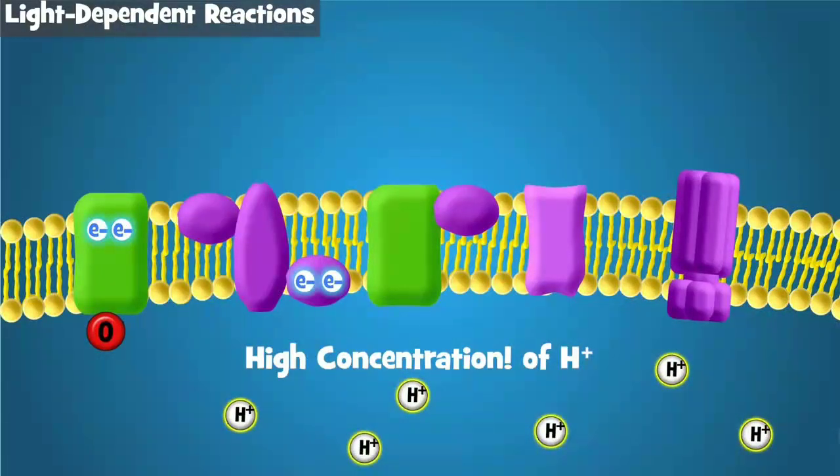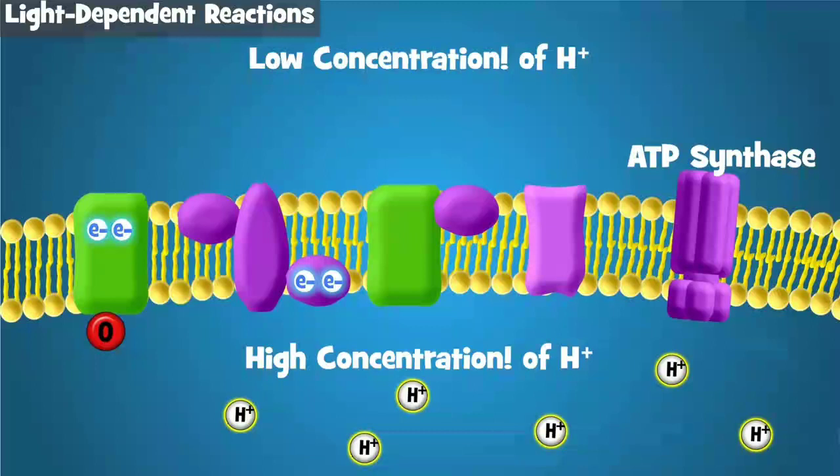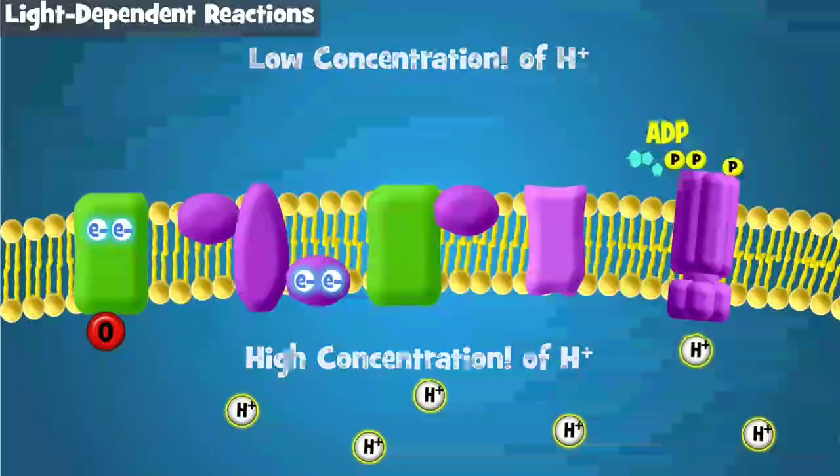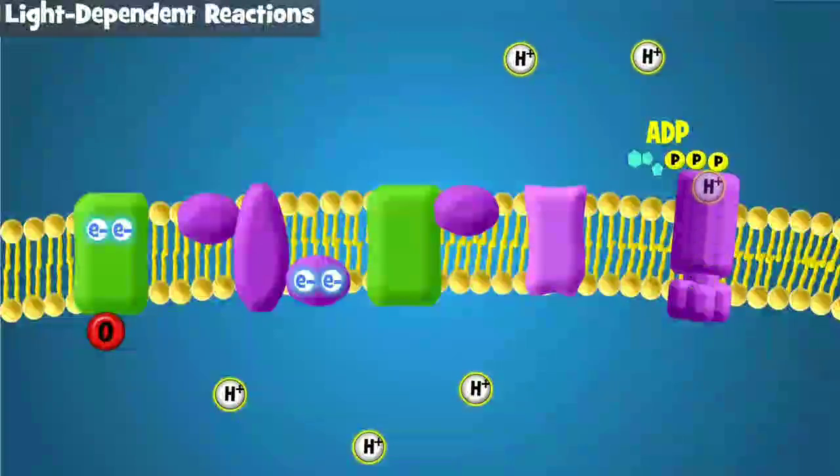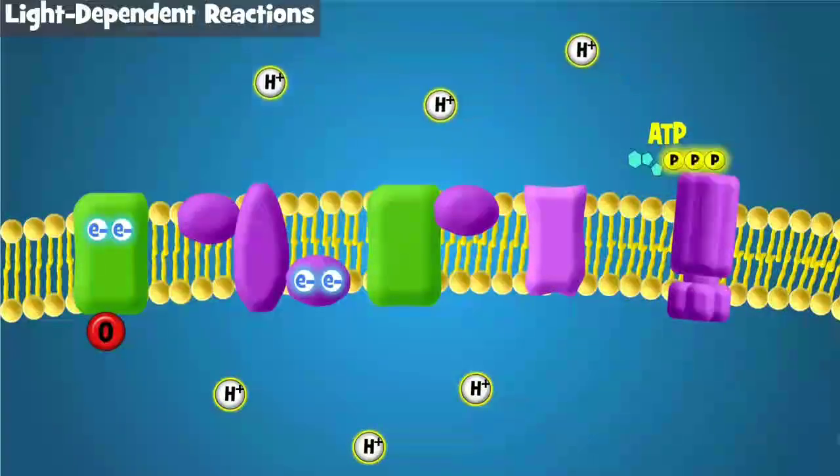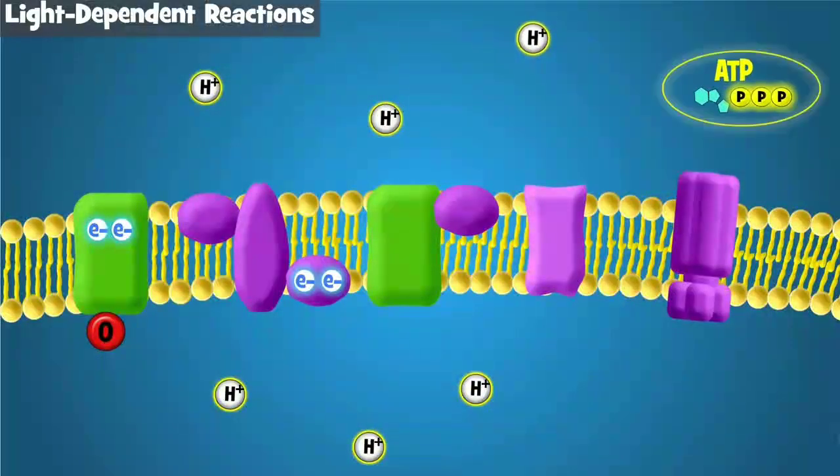These ions would be trapped inside the thylakoid, but a special enzyme called ATP synthase allows them to passively diffuse from high to low concentration. This flow of hydrogen ions through ATP synthase causes ATP synthase to spin and produce ATP, similar to how water flowing through a turbine produces power at a hydroelectric dam.